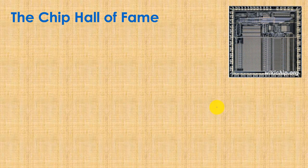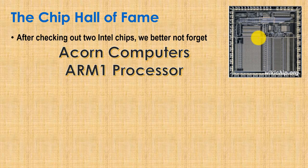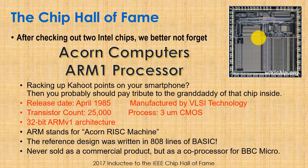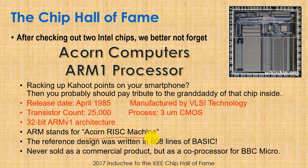We've gotten to the part of our lecture where we look into the chip hall of fame. This week we have the Acorn Computers ARM1 processor. After two Intel chips in our first two lectures, we're looking at Acorn Computers — which you may not have heard of, but you've probably heard of ARM. Nearly every smartphone or embedded computation device you own that isn't a laptop, desktop, or server is using a grandchild of this chip. ARM interestingly stands for Acorn RISC Machine — a reduced instruction set computer architecture — and is now the leading architecture for embedded computers.